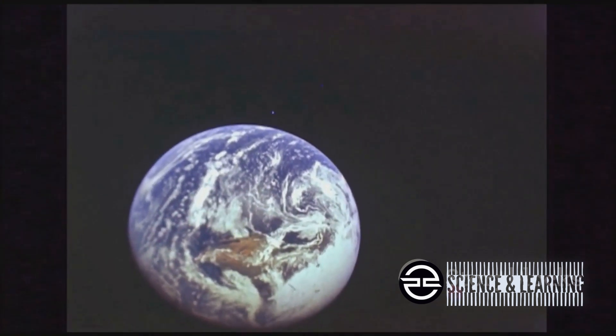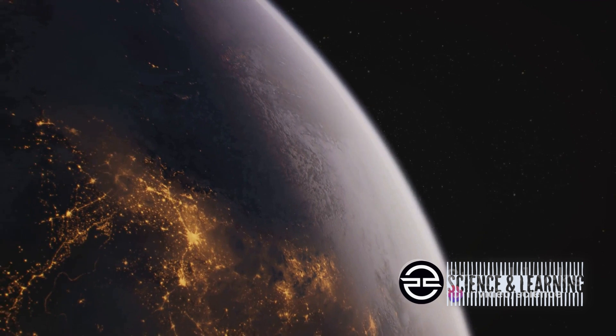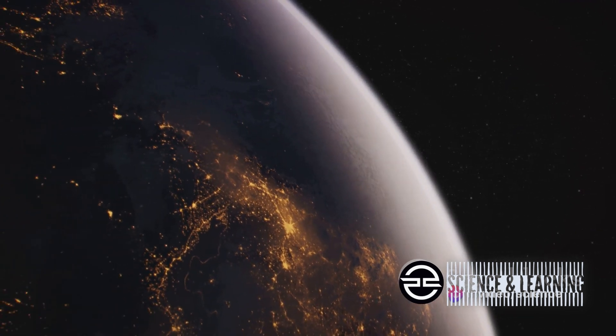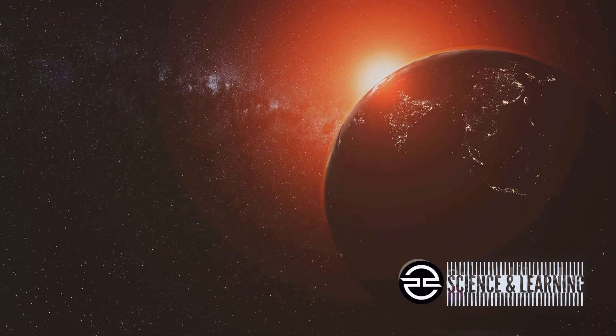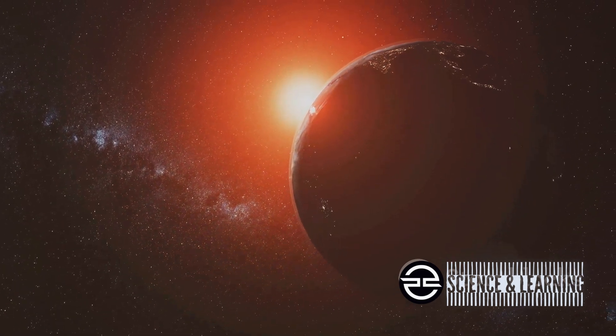Eccentricity refers to the shape of Earth's orbit around the sun. It shifts from nearly a perfect circle to a slight ellipse over a cycle of about 100,000 years. This too affects the amount of sunlight received by our planet.